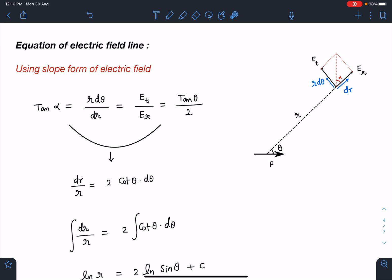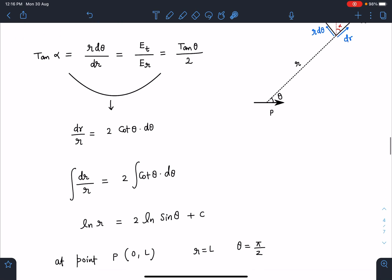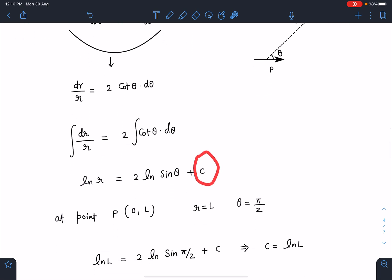We can separate the variables with theta terms on one side and r terms on one side. This equation gives us dr/r = 2 cot θ dθ. We can integrate this using one constant for integration: ln r = 2 ln sin θ. Integral of cot θ dθ is ln sin θ.